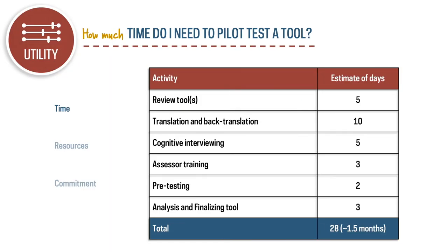I looked back at the last few years of my work and averaged how much time it takes to pilot test a tool — reviewing and field testing before actual data collection. On average, it takes about five days to review a tool with a team, get buy-in, and confirm the tool is appropriate; about 10 days for translation; five days to test it with a small group of children; three days to train assessors; two more days to pre-test or field test it; and another three days to analyze the data and finalize the tool. So on average, it takes about a month and a half just to pilot and field test a tool.